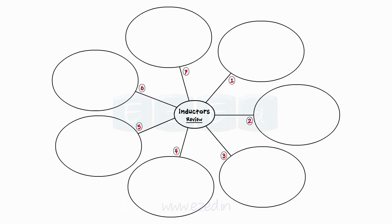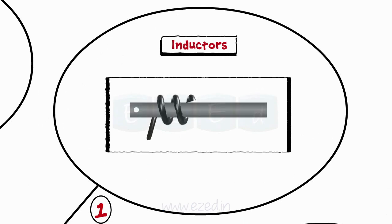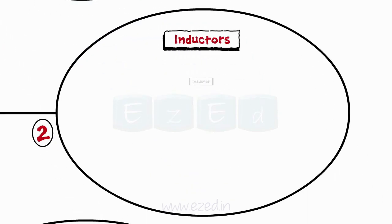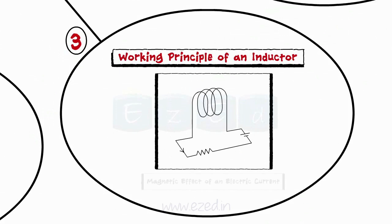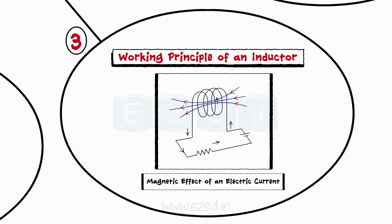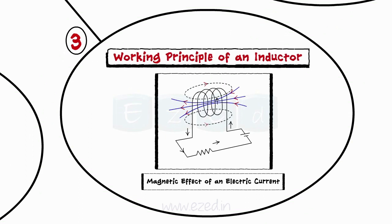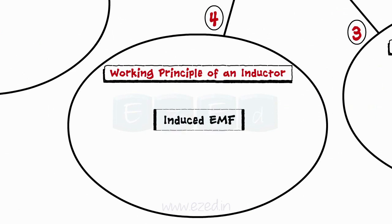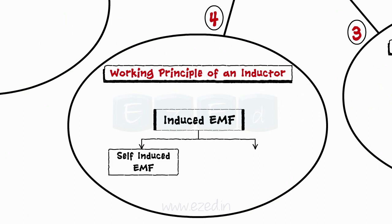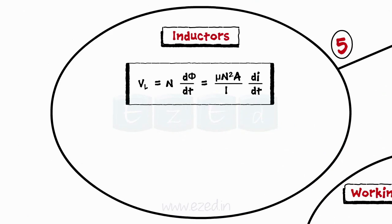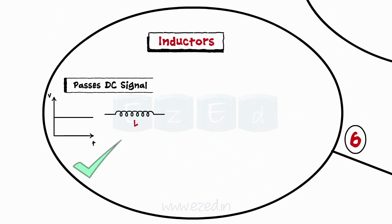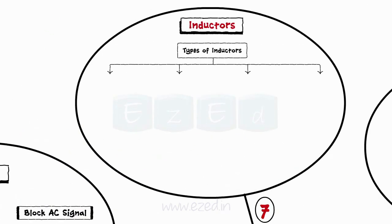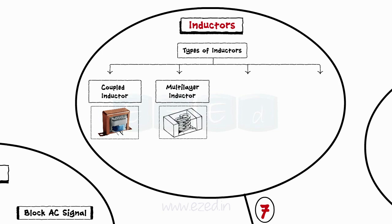Let's take a quick review of what we have studied in this lecture. When a metal wire is wound in a circular manner, we obtain an inductor, represented by the letter L with its unit as Henry. When a current passes through a coil or conductor, it produces a magnetic field around that conductor — this forms the basic principle of an inductor. EMF induced in an inductor is of two types: self-induced EMF and mutually induced EMF. Voltage induced in an inductor is given by VL. Back EMF is equal but opposite in magnitude to VL. An inductor passes the DC signal and blocks the AC signal. The different types of inductors are coupled inductor, multilayer inductor, ceramic core inductor, and moulded inductor.